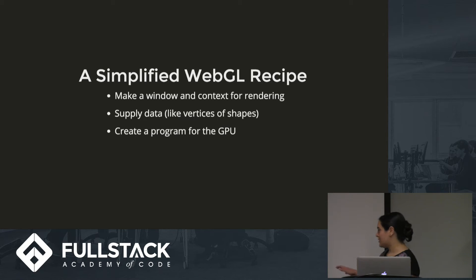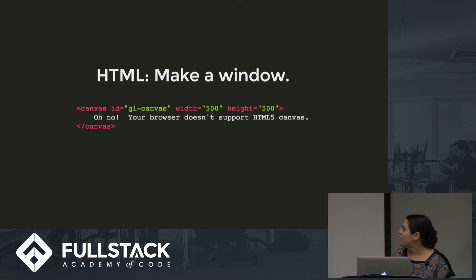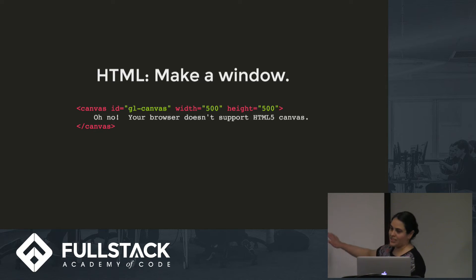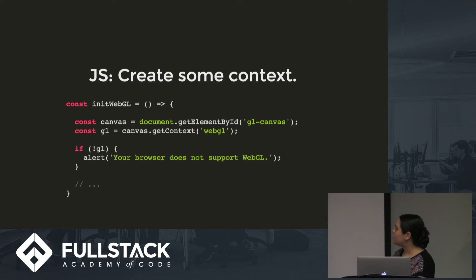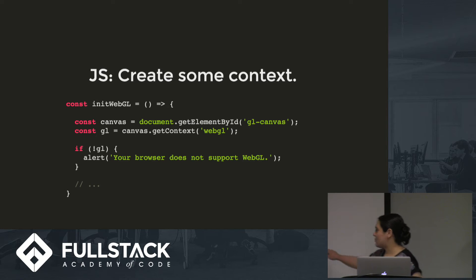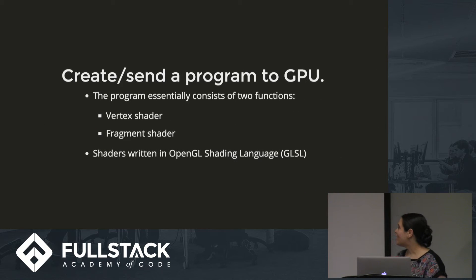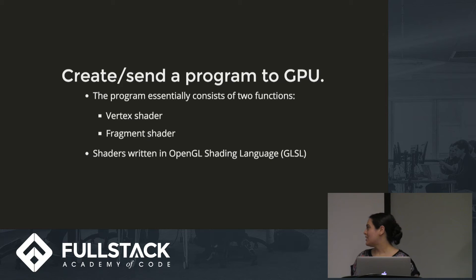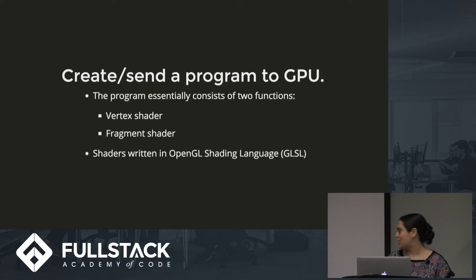You have to make a window and context for rendering, give it data, and then make a small program for the GPU. To make a window, you set up a canvas element in HTML and give it an ID you'll reference later. Then in JavaScript you create some context — an initialization function grabs the canvas by that ID and tells it you'd like to use WebGL. From there you need to create a little program for the GPU. WebGL expects two things: a vertex shader and a fragment shader, which are small programs that determine how light or dark something is and where it is. There's also now a geometry shader, but we don't need it today. These are written in GLSL.